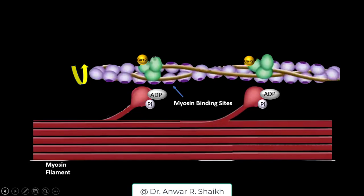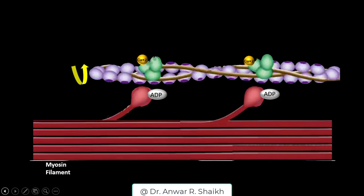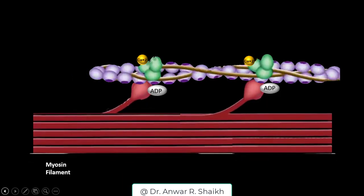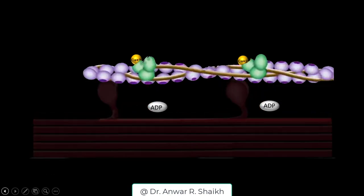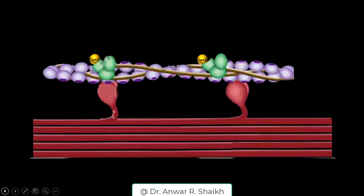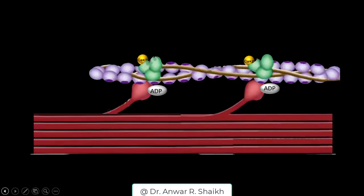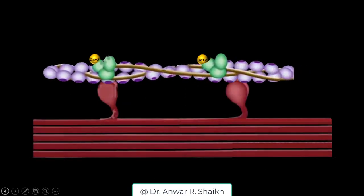At this stage, the head of each myosin unit is bound to an ADP and a phosphate molecule remaining from the previous muscular contraction. The myosin heads release these phosphates and bind to the actin myofilaments via the newly exposed myosin binding sites. The two myofilaments glide past one another, propelled by a head-first movement of the myosin units, powered by the chemical energy stored in their heads. As the units move, they release the ADP molecules bound to their heads.